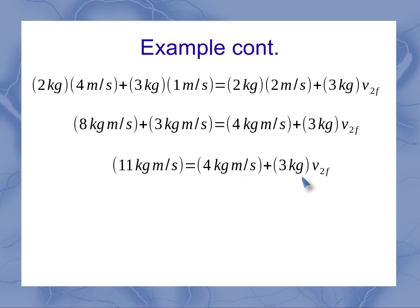So I can start trying to find out what that is first by moving my 4 and subtracting it over to the other side. Giving me 7 equals my 3 kg times my unknown v2f. If this whole quantity here is equal to 7, then my two sides of my equations will balance out.